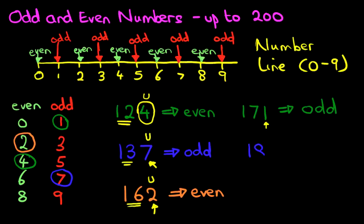The next one — 180. Now what is 180? Is it an odd number or is it an even number? Have you worked it out? Let's go through this. Remember, all we're concentrating on is the digit on the right-hand side. In this case it is 0. Ignore the 1 and the 8 — we're not interested in those. Now where does 0 appear in the columns? It's over here. And the 0 is an even number. If 0 is an even number, then 180 is also an even number.